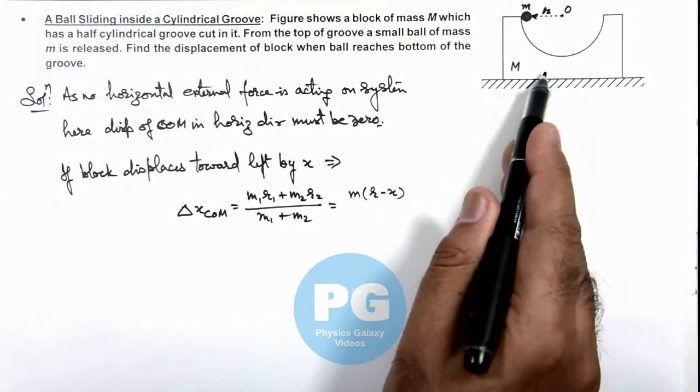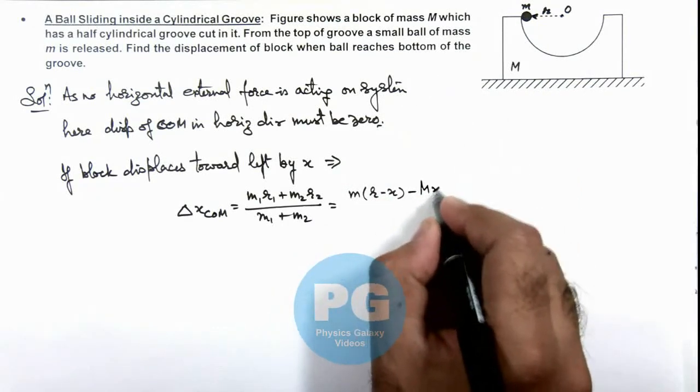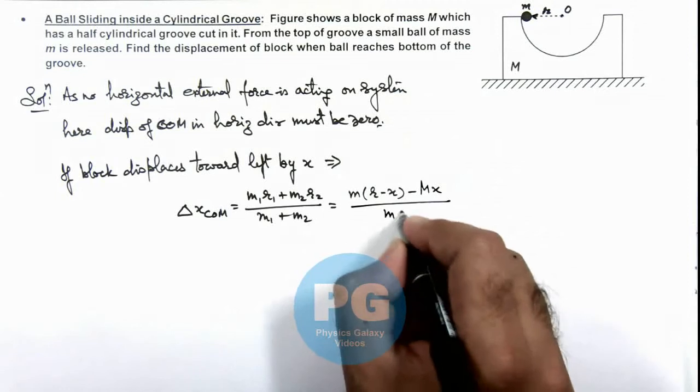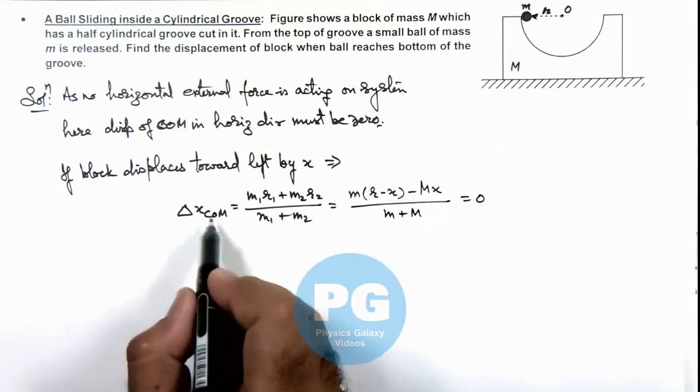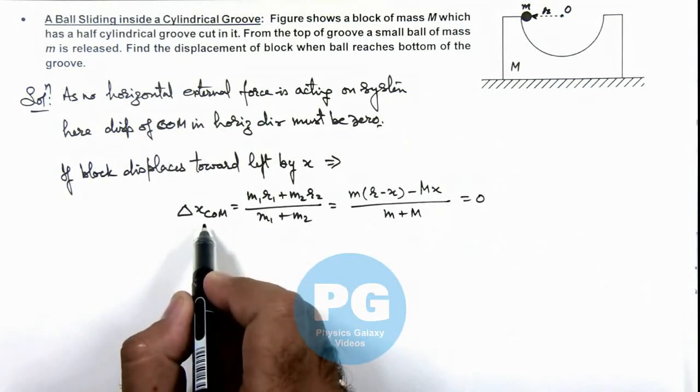As block goes toward left by x, it is minus Mx divided by m plus capital M, and this should be zero, as there is no displacement in center of mass in horizontal direction.